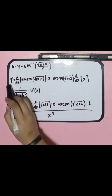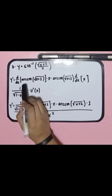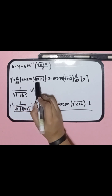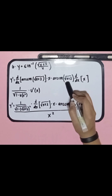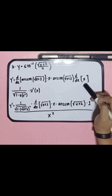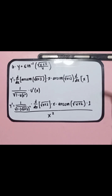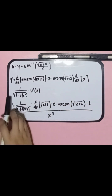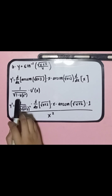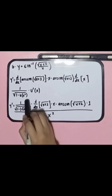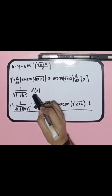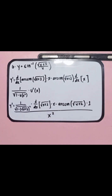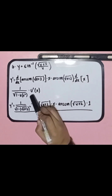This gives us y prime equal to the derivative of arcsin multiplied by the square root of (x plus 2) over x, minus arcsin multiplied by the square root of (x plus 2) times the derivative of x. Applying the differentiation rule for arcsin: 1 over the square root of 1 minus u squared, multiplied by u prime. Since the chain rule is also applied, we multiply by the inner function's derivative u prime.